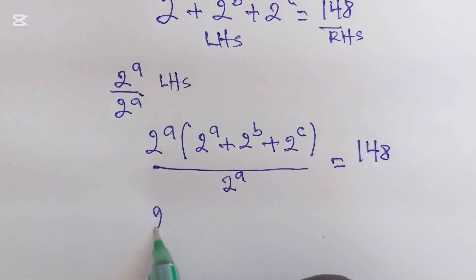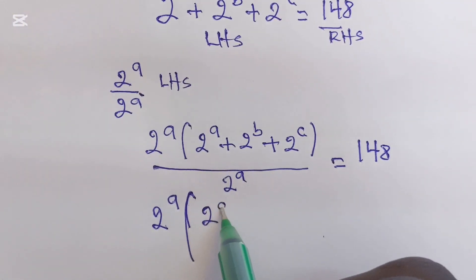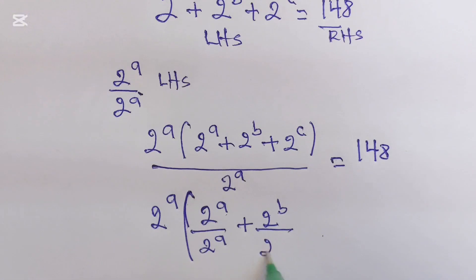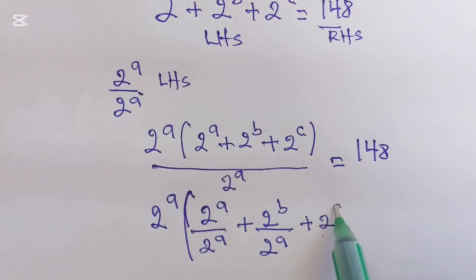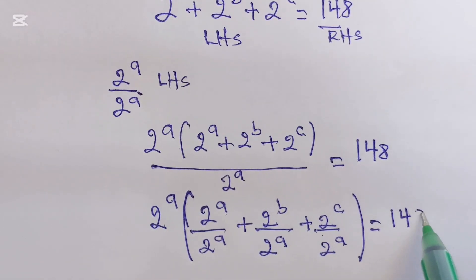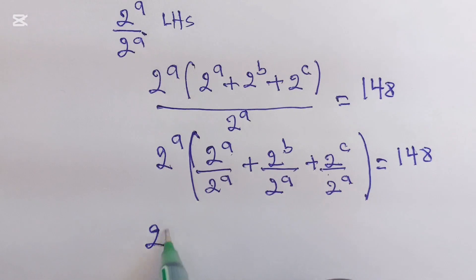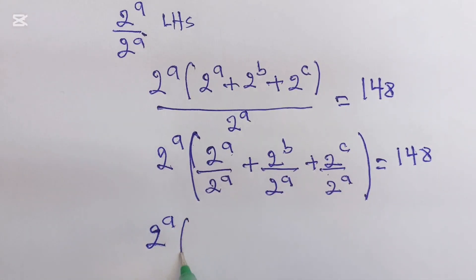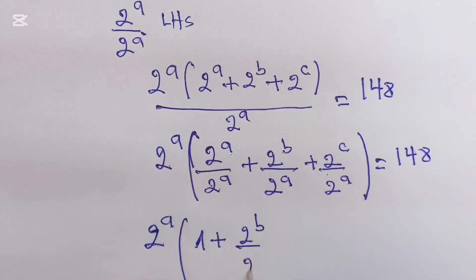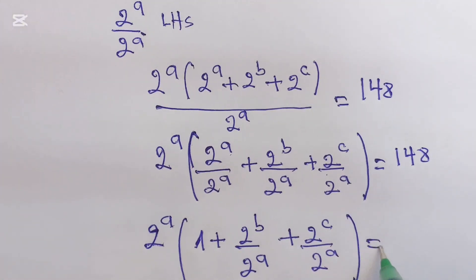This will be equal to 2^A times the bracket of: 2^A over 2^A, plus 2^B over 2^A, plus 2^C over 2^A, which equals 148. This simplifies to 2^A times (1 + 2^B over 2^A + 2^C over 2^A) = 148.